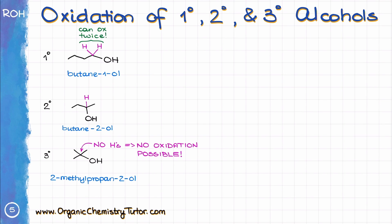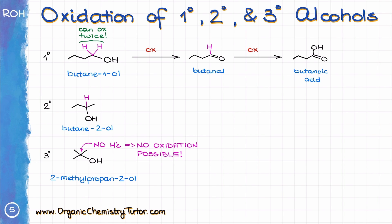The main requirement for oxidation is the presence of a hydrogen on the carbon bearing the OH group. Thus, primary and secondary alcohols can be oxidized, while tertiary alcohols will stay unchanged — no matter what. Since the primary alcohol has two hydrogens on that carbon, it can undergo oxidation twice. After the first round, a primary alcohol makes an aldehyde; if oxidation continues, it makes a carboxylic acid. The secondary alcohol can only go through oxidation once, giving the corresponding ketone. Because primary alcohols can undergo two-stage oxidation, you must be very mindful about reagent choice.